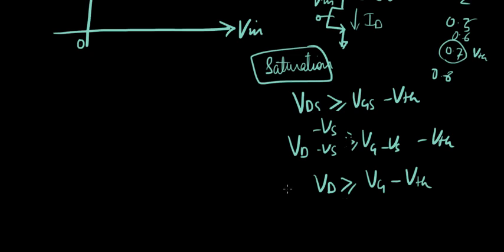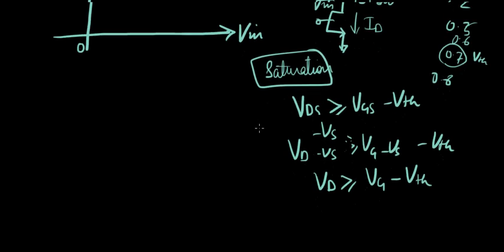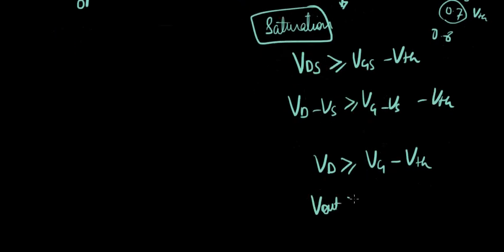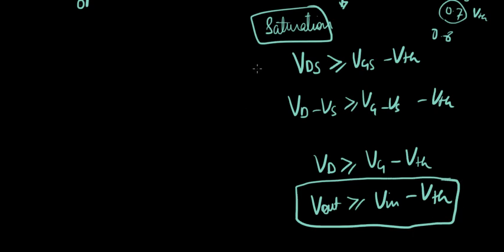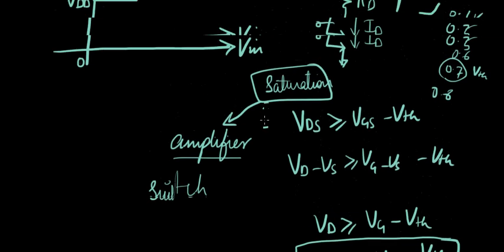For our circuit, what is VD? VD is the output voltage, right? So Vout should be greater than or equal to VG, which is VIN, minus VTH. This is the necessary condition for our circuit to be in saturation. When a transistor is in saturation, it acts as an amplifier. If it's not in saturation, it's going to be a switch. Because we're starting amplifiers, we would love for our transistor to be in saturation. Let's look at that in the circuit here.